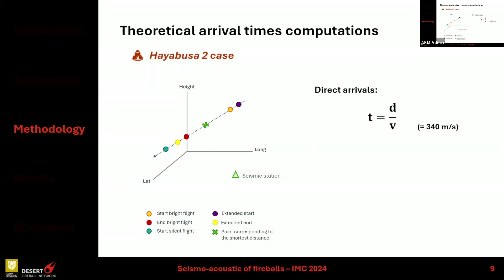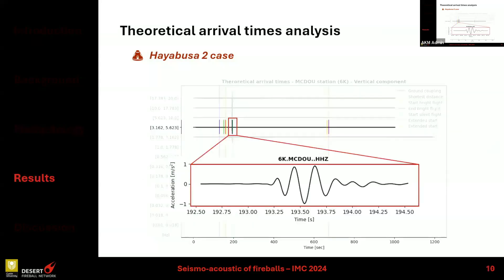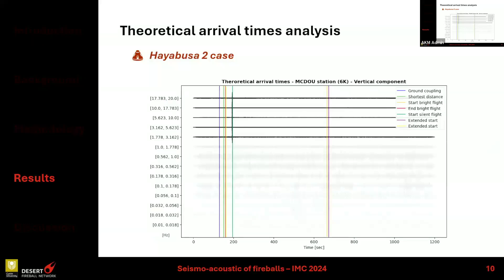In the case of Hayabusa2 we have a supplementary point, which is the start of the silent flight. I used a constant speed of sound of 340 m/s. I also roughly looked at the coupled wave — using the last test point propagating perpendicular to the ground and then converting into a Rayleigh wave at the seismic station.